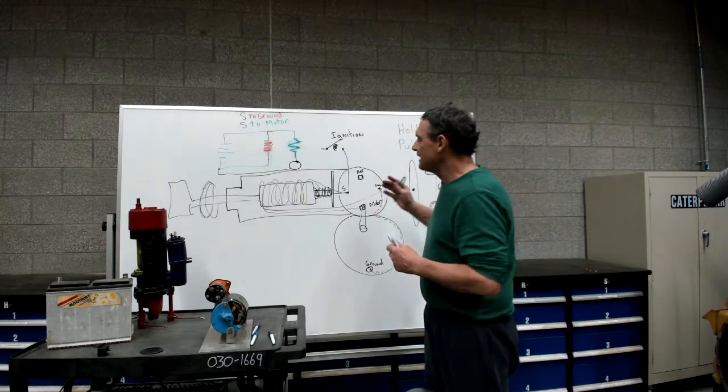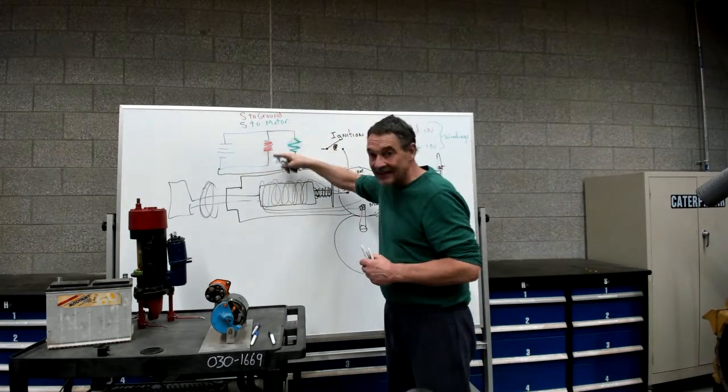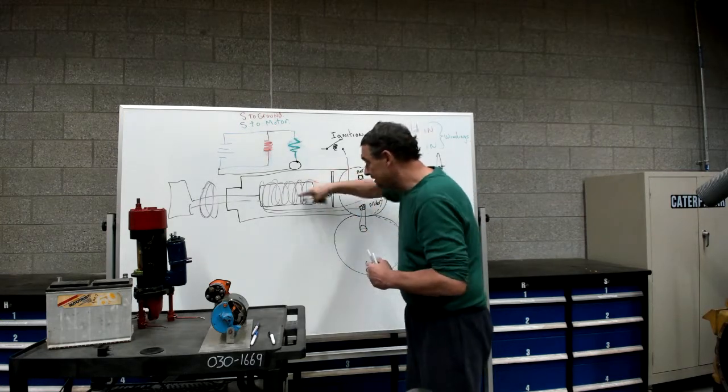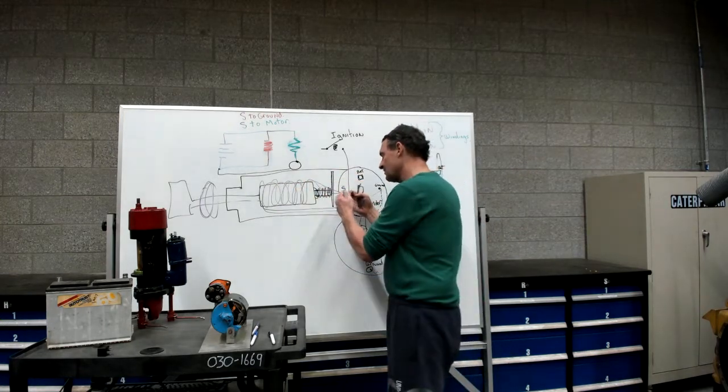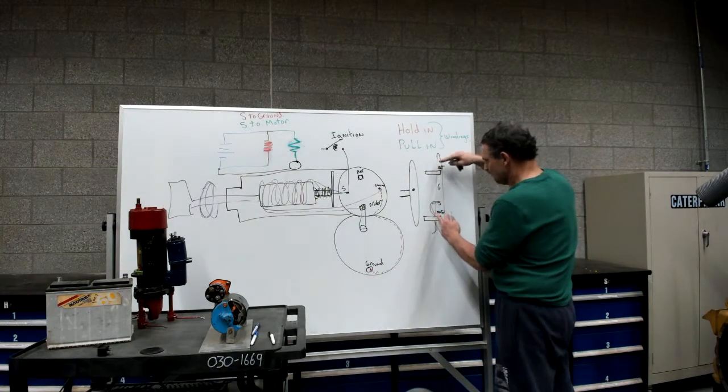One thing we have to realize is that the hold-in windings are very light and the pull-in windings are very heavy. Combined, the amperage through those two windings will pull this solenoid in, having the contact disc make contact between the battery and the motor terminal.